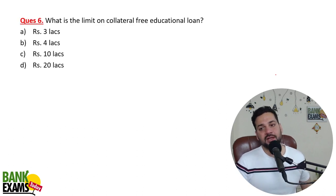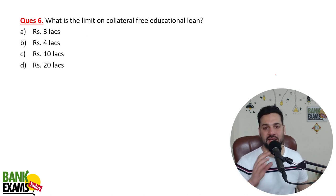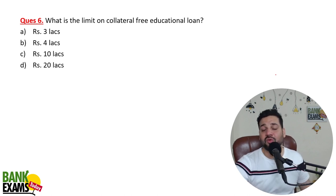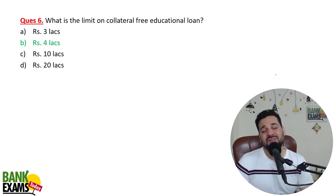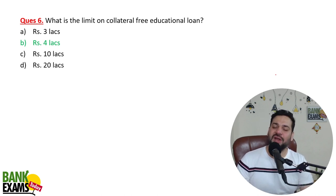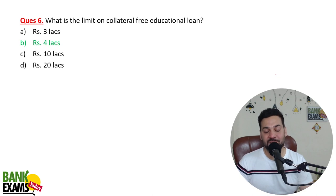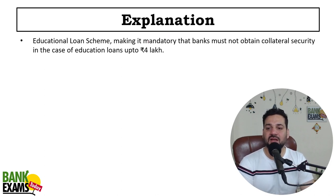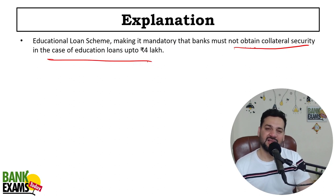Collateral-free — agar aapko educational loan lena hai kisi bank se, toh uski limit kitni hai? Agar bina kisi security ke aap educational loan lena chahte ho, to uski limit 4 lakh rupay tak hai. RBI ne banks ko bola hai — education loan scheme ke under, making it mandatory that banks must not obtain collateral security in case education loan is up to 4 lakhs.